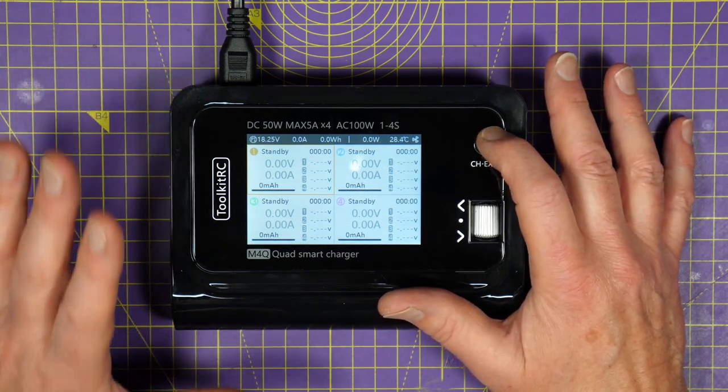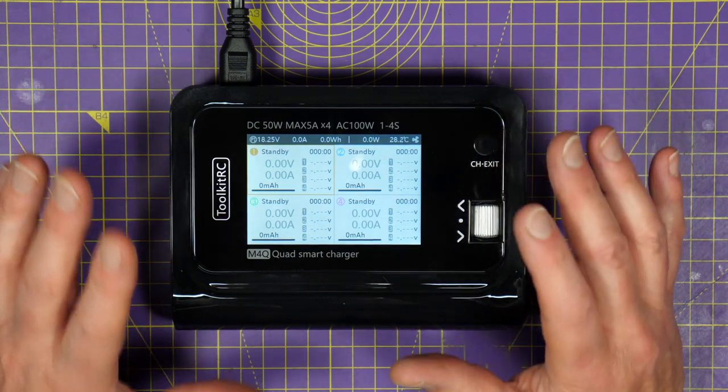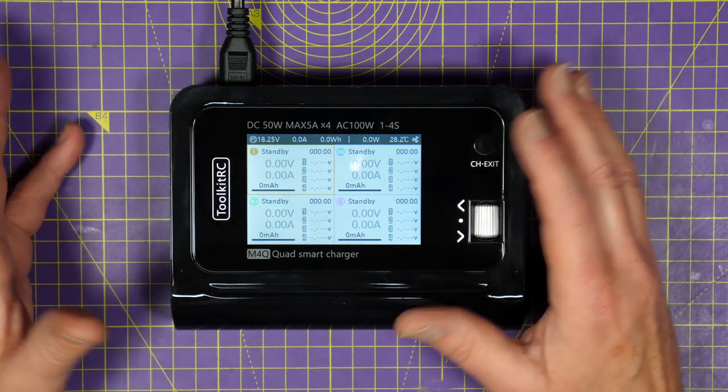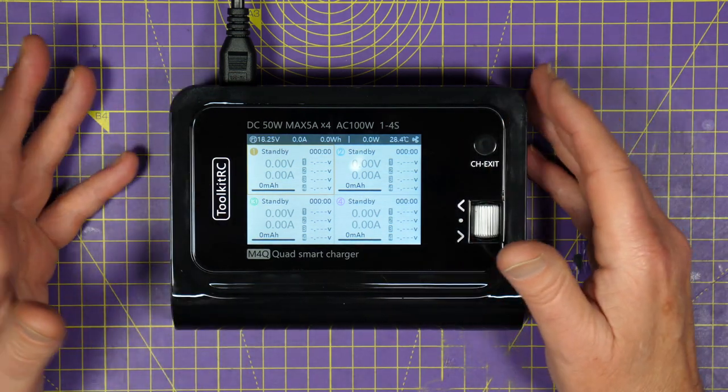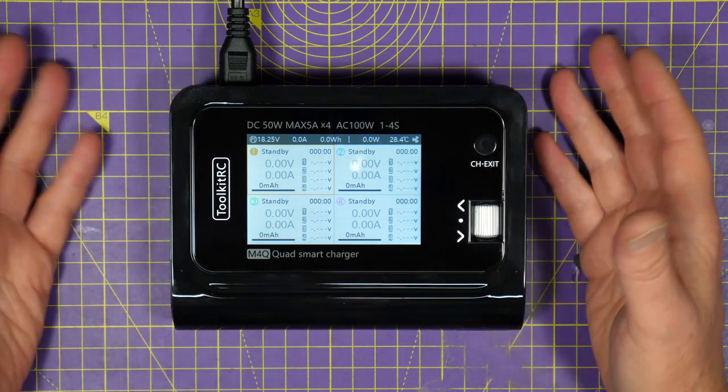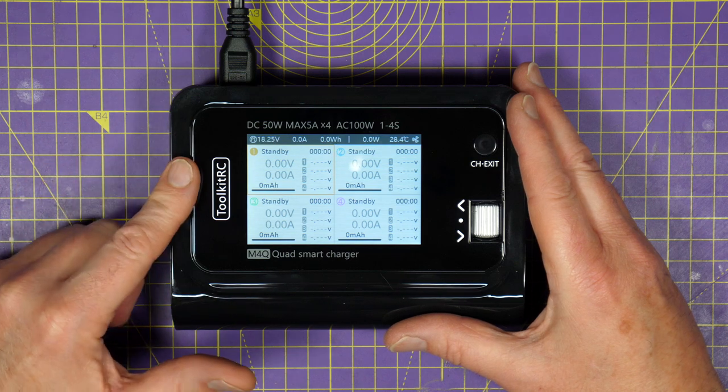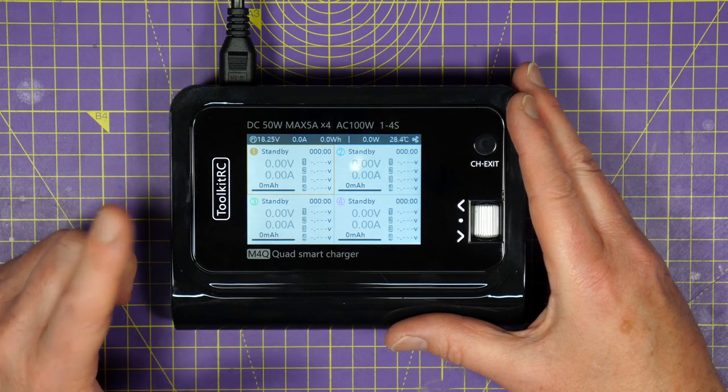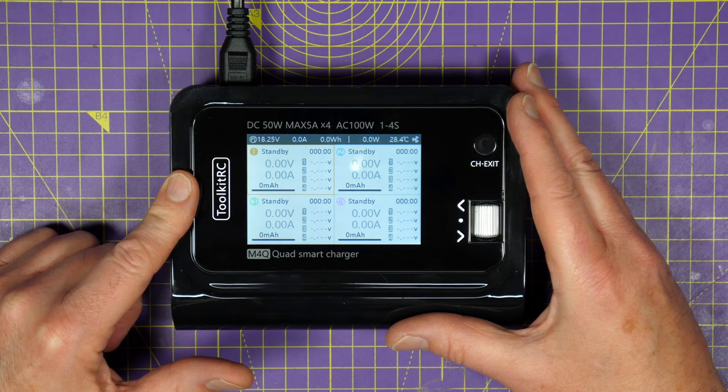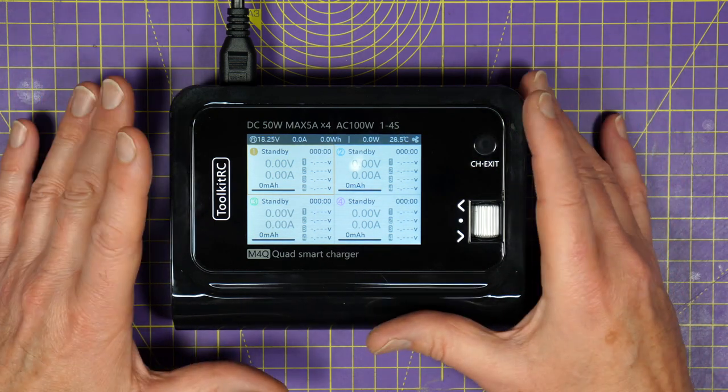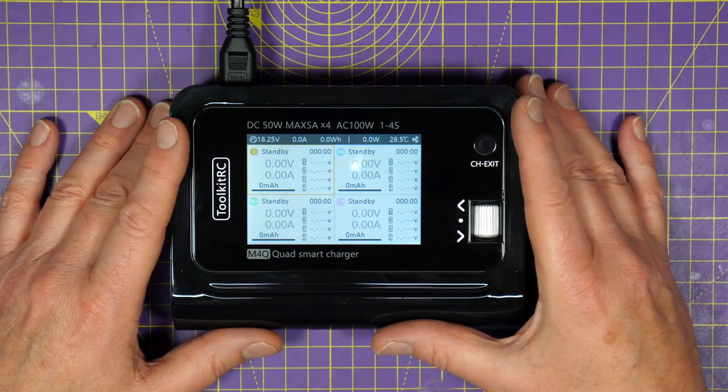With this M4Q Quad Smart Charger, you can charge four batteries at the same time, truly in parallel. They don't even have to be the same level of discharge. They can even be different cell counts, 2S, 3S, 4S, or even different cell chemistries. Now, dual chargers are fairly common, but a four-channel charger at this sort of price is a real surprise. It's sort of like having four separate battery chargers all in one box that's fantastically easy to use.